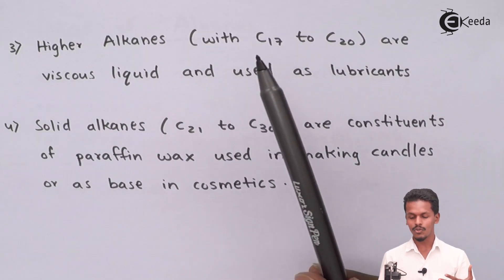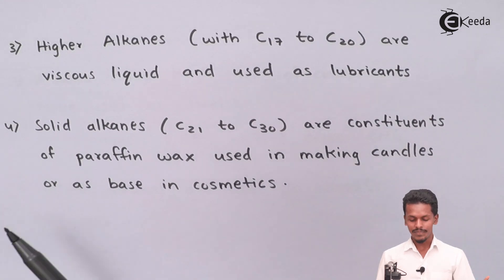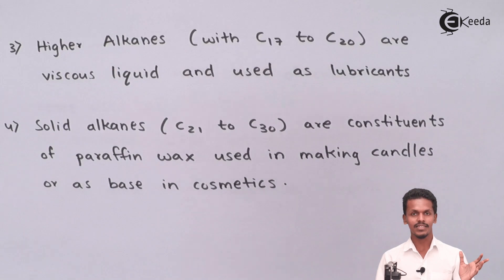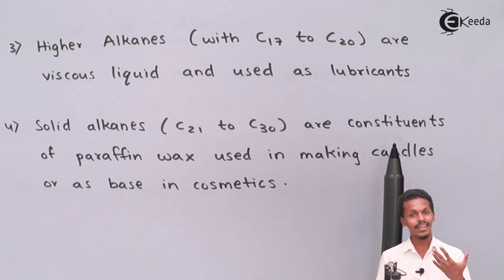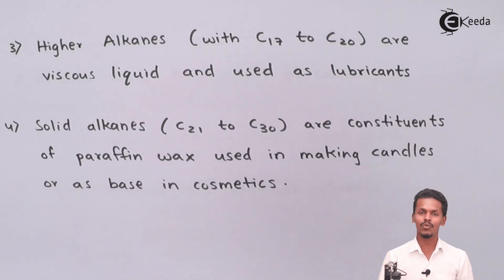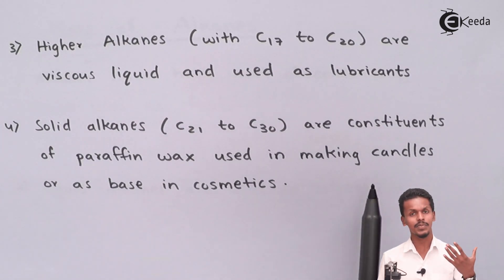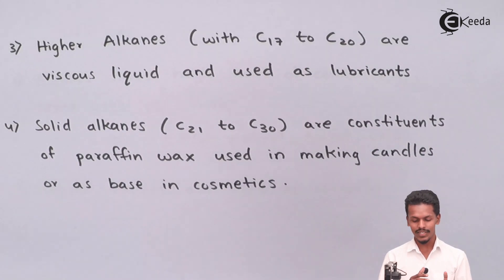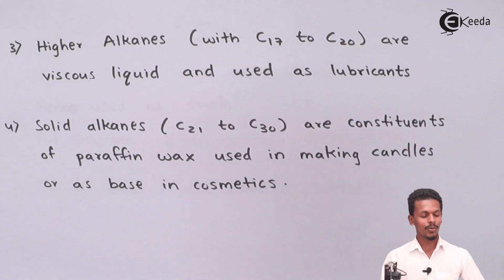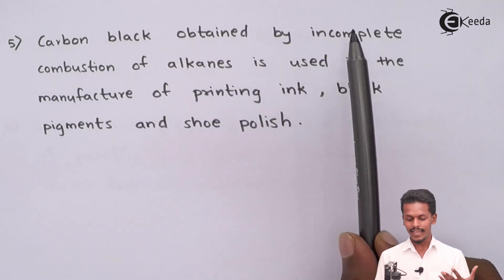The solid alkanes, from C21 to C30, are the constituents of paraffin wax. Since alkanes are known as paraffins, these solid alkanes are used as wax, which is used in making candles and as a base in cosmetics.